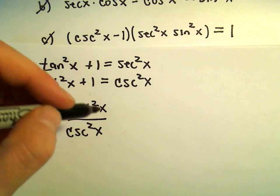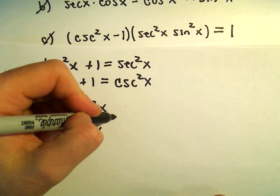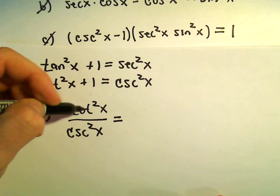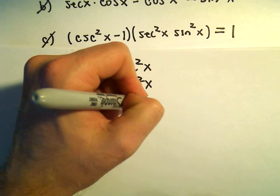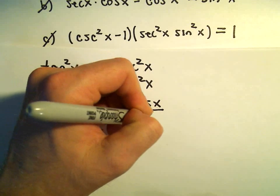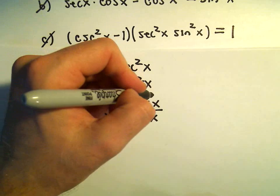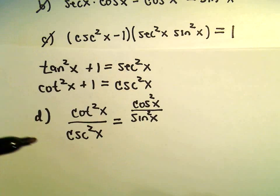And at this point, probably what I would do is I would rewrite these. So let's see, cotangent is going to be cosine x over sine x. But again, they're being squared, so I'm going to put the squares on both of them.